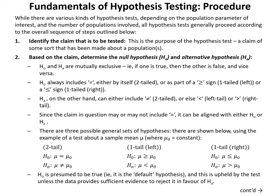H₀ and Hₐ are mutually exclusive — if one is true, the other is false. H₀ always includes an equal sign: by itself for a two-tailed test, as part of a greater-than-or-equal-to sign for a one-tailed left test, or a less-than-or-equal-to sign for a one-tailed right test. Hₐ includes either the not-equal-to sign (two-tailed), less-than sign (left-tailed), or greater-than sign (right-tailed).